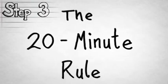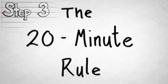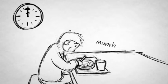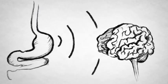Step 3. The 20-minute rule. After you've eaten your first round, make yourself wait 20 minutes before going back for seconds. Odds are, you won't be hungry anymore. 20 minutes is about how long it takes for your brain to realize your stomach is full and stop sending those annoying hunger pains.